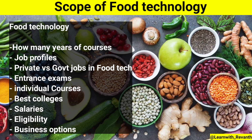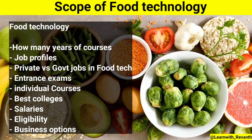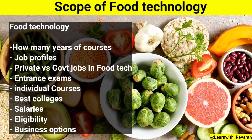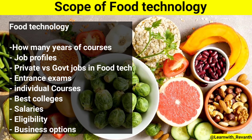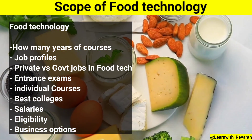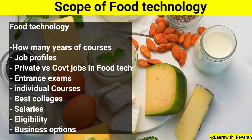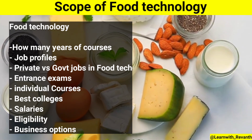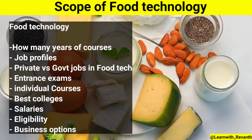Food technology is not just about raw materials. Raw materials are made into edible food. For example, edible items like peanut butter and milk. For example, pickles — mango pickles — where mango is the raw material.